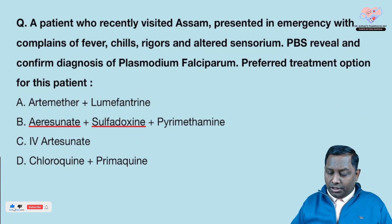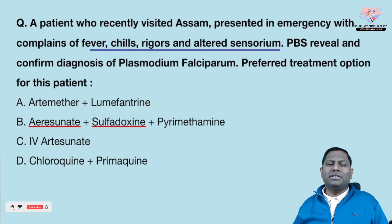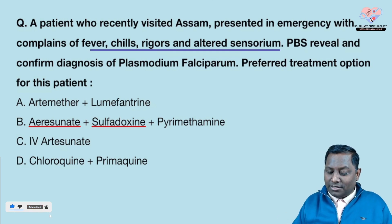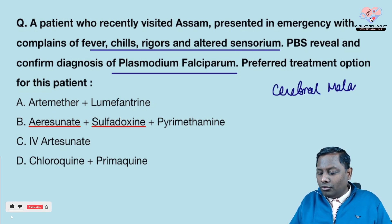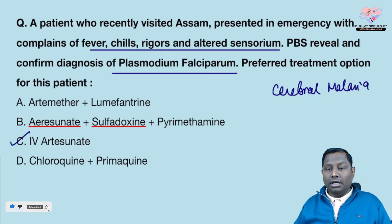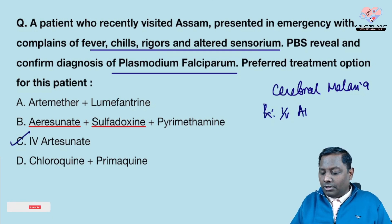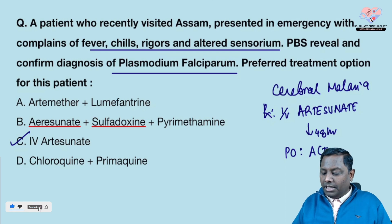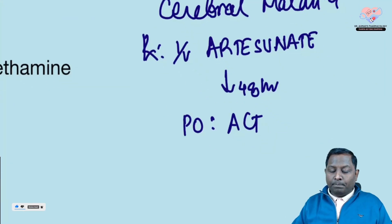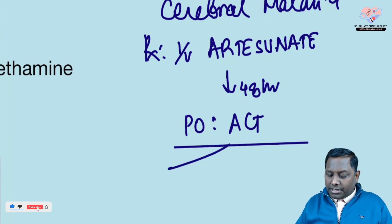The last question: a patient who recently visited Assam came to the emergency with fever, chills, and altered sensorium. This is a case of falciparum malaria, associated with cerebral malaria. Always remember — a patient with cerebral malaria should be treated with IV artesunate. Once the patient gains consciousness, around 48 hours later, you can shift the patient orally to artemisinin combination therapy (ACT).